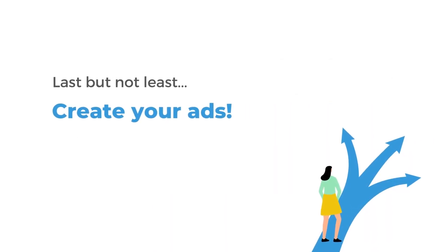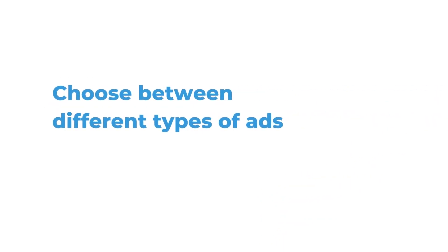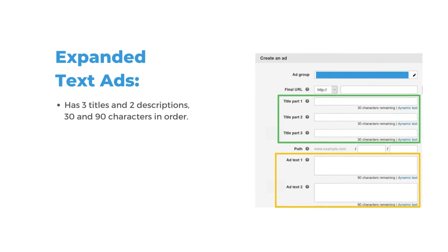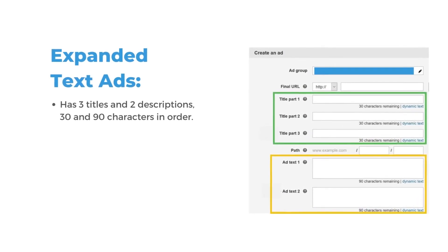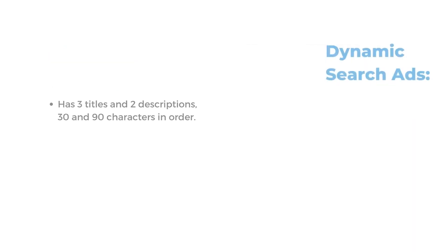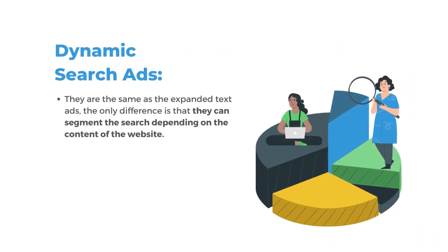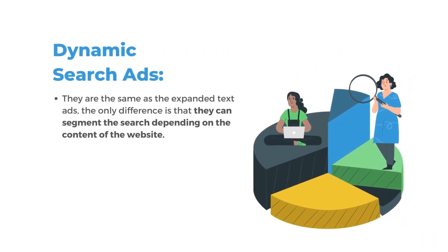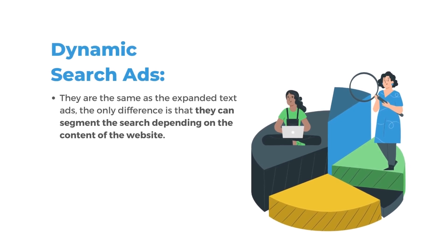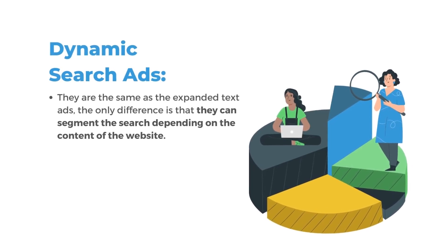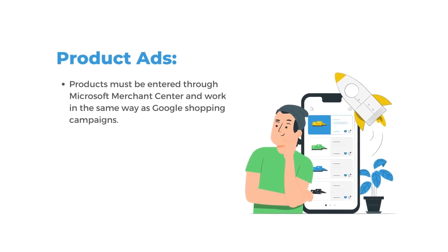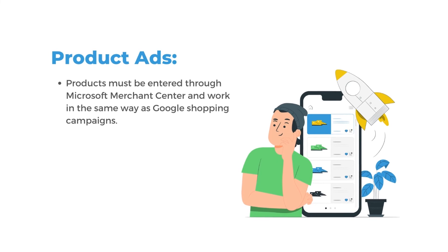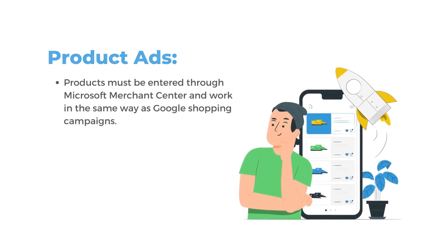Last but not least, create your ads. Choose between different types of ads. Expanded Text Ads has three titles and two descriptions, 30 and 90 characters in order. Dynamic Search Ads are the same as Expanded Text Ads — the only difference is they can adapt the search depending on the content of the website. Product Ads must be entered through Microsoft Merchant Center and work in the same way as Google Shopping campaigns.